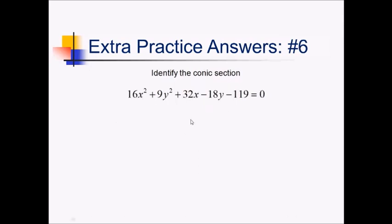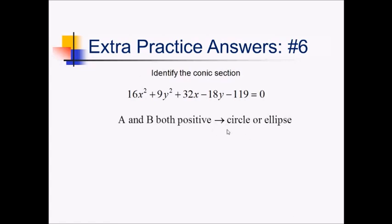For this problem, I notice we have two squared terms, so it's not a parabola, and I notice that these two terms both have positive coefficients. A and B are both positive, so that means we must be dealing with an ellipse or a circle. Since A and B are different — 16 and 19 are not the same — that means that we have an ellipse.